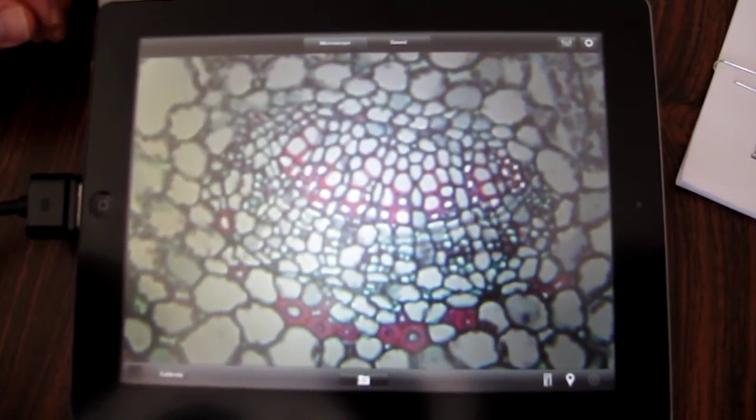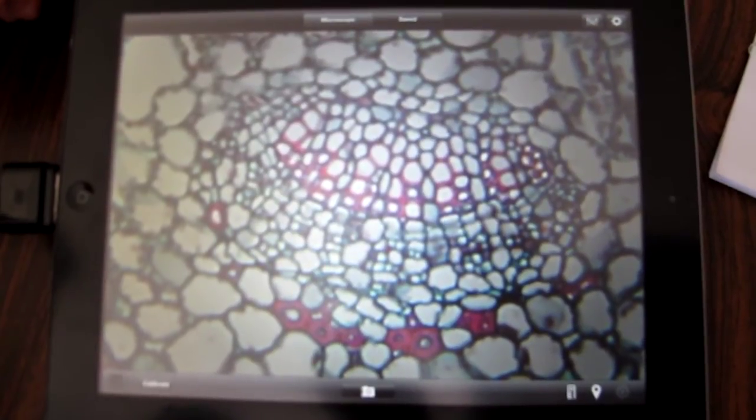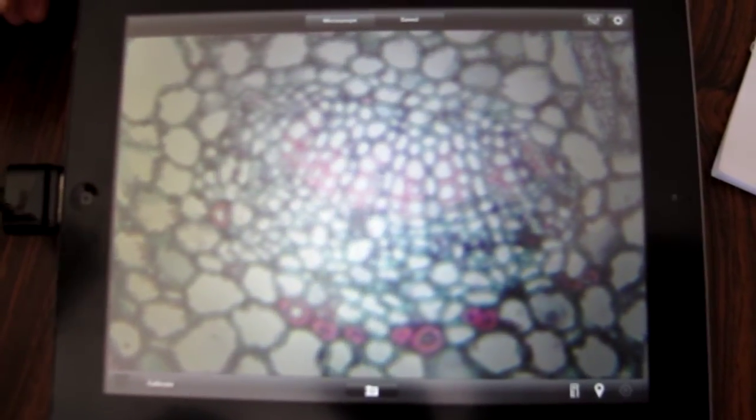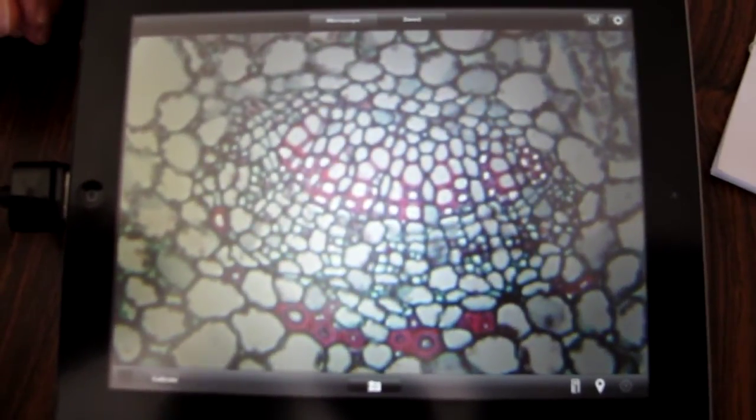We're looking at a typical herbaceous dicot leaf. Now you could just... viewers might recognize the phloem and the xylem. But now we're gonna identify... as biology teachers there it's starting to flow them.